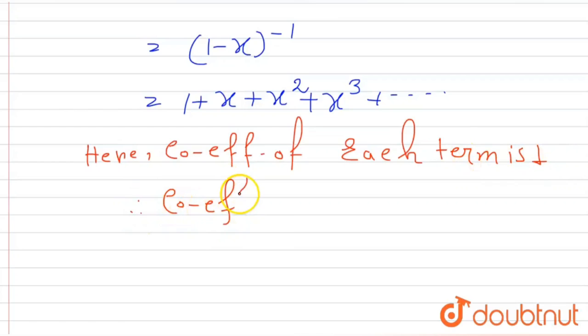Therefore, the coefficient of x^n will be 1. So 1 is our required answer. Thank you.